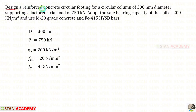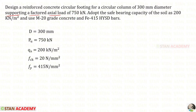Design a reinforced concrete circular footing for a circular column of 300 millimeter diameter. The column diameter is given as 300 mm, supporting a factored axial load PU of 750 kilo newton. The safe bearing capacity of the soil QS is given as 200 kilo newton per meter square.